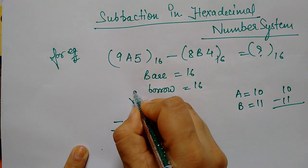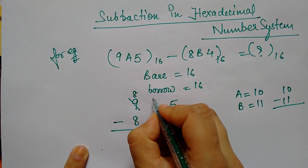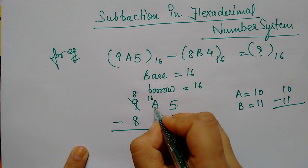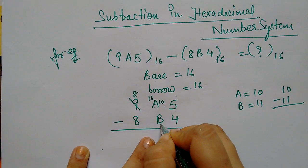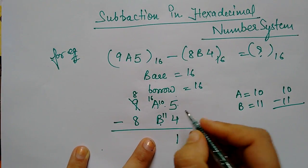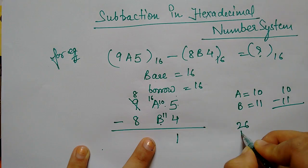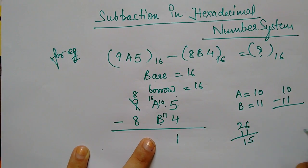So what will it be? 8. Now how much do we borrow? 16. And how much do we already have? 10. So the total is 26. So you have to minus B. B means 11. So 26 minus 11 means 15.